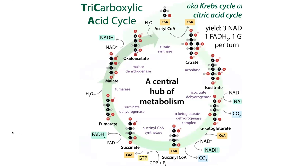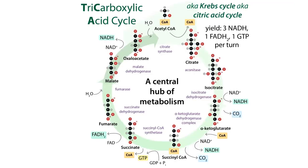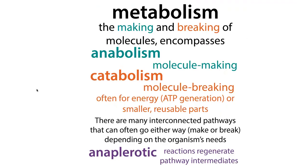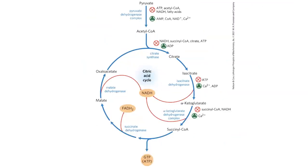The key thing about the tricarboxylic acid cycle is that it's used as both catabolic — for breaking things down — as well as anabolic, for making molecules. In order to keep making molecules, if we take things out of the pathway, we also need ways to put things in. This introduces the idea of anaplerotic reactions — reactions that regenerate the pathway intermediates. All of this is going to be tightly regulated.